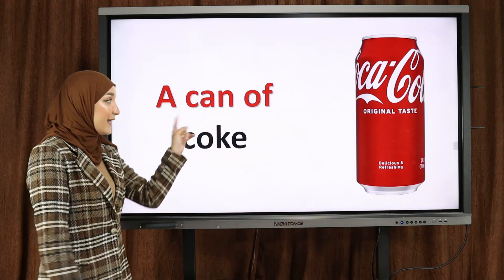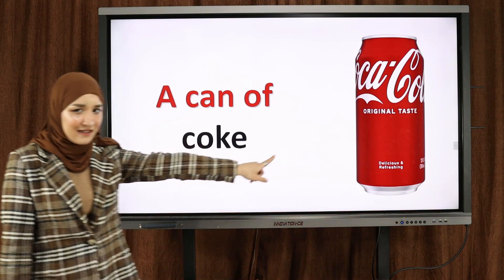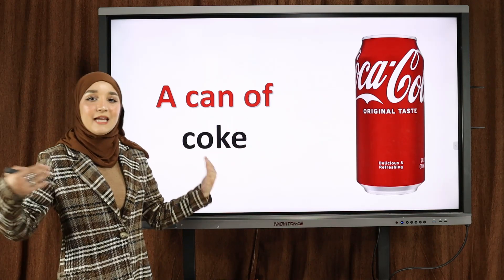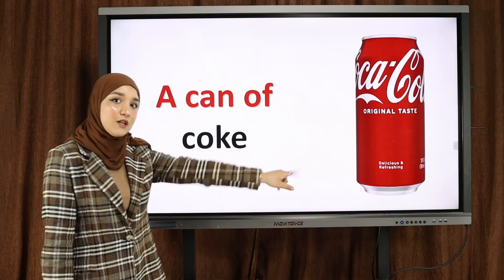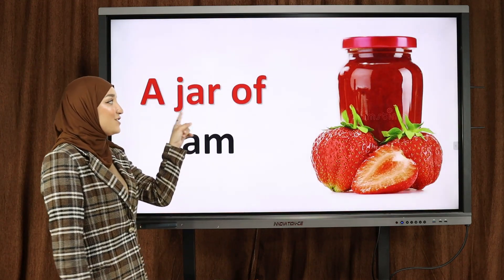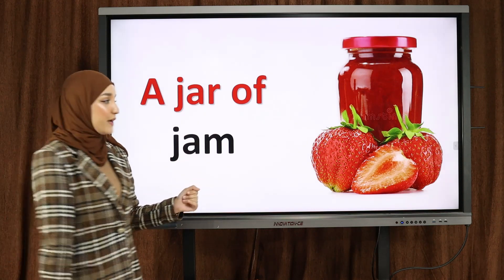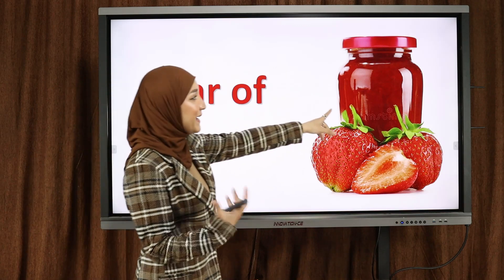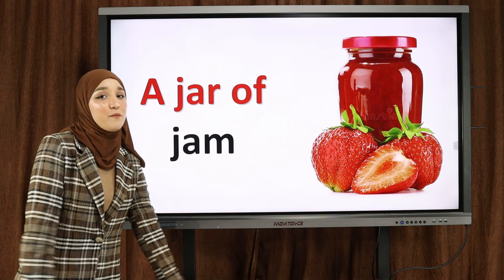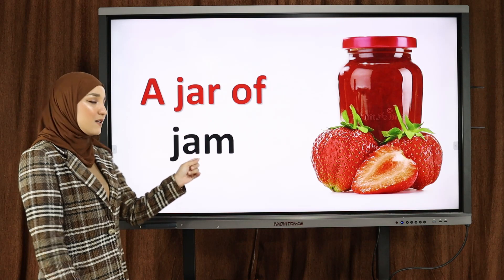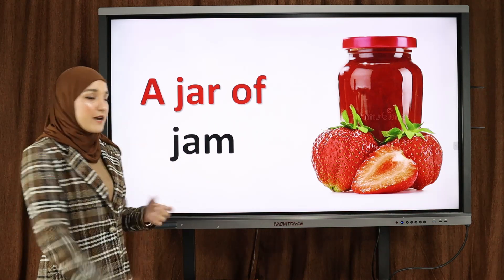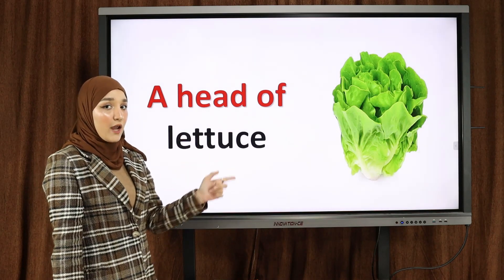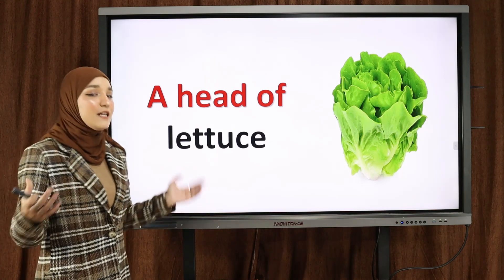A can of Coke — this is a can, it's not like a bottle. A can of Coke or a can of soda — soda is any مشروب, but Coke is specific, Coca-Cola. A jar — J-A-R — a jar of jam. Jam هو المربى — this is a jar, برطمان, it's made out of glass. So a jar of jam — برطمان من المربى.